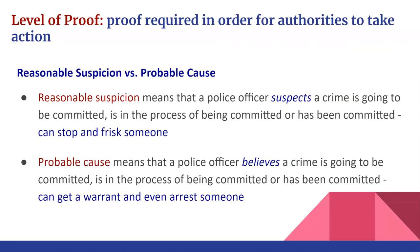Reasonable suspicion allows law enforcement to stop and frisk individuals if they believe a crime is being or has been committed, without necessarily needing a warrant. Probable cause — belief that a crime has been or is about to be committed — allows them to get a warrant and make an arrest. In hot pursuit or urgent situations, the expediency of the situation may override the warrant requirement, though this must be justified in court.